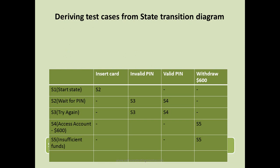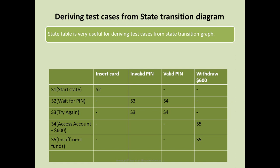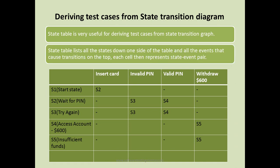A state table is very useful for deriving test cases from a state transition graph. The state table lists all the states down one side and all the events that cause transitions along the top. Each cell then represents a state-event pair. In our ATM example, the states are listed in rows and the events — insert card, invalid PIN, valid PIN, withdraw $600 — are listed as columns.